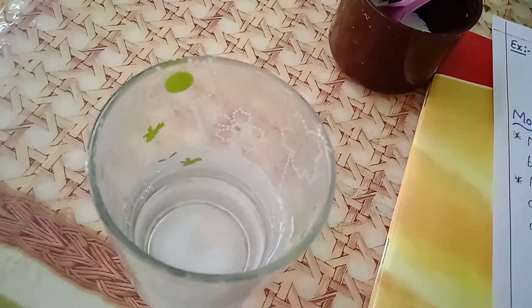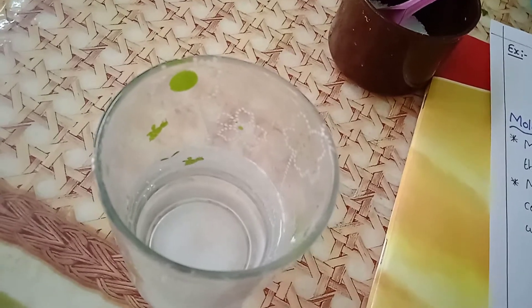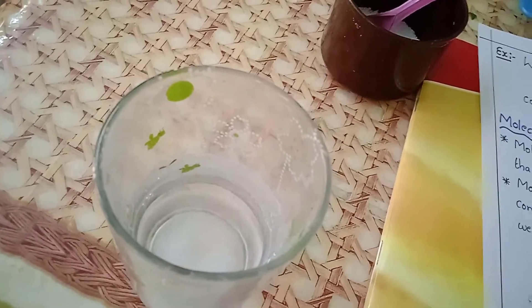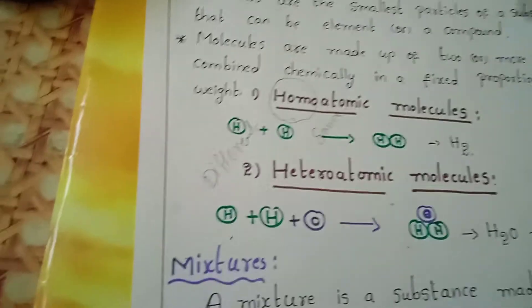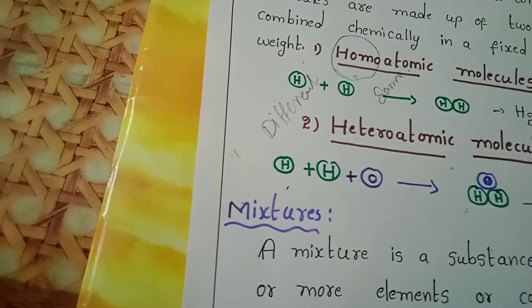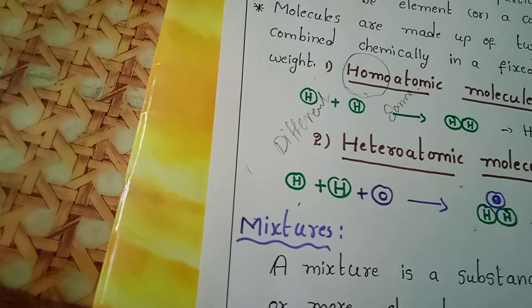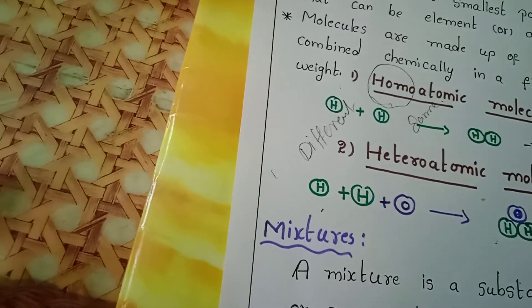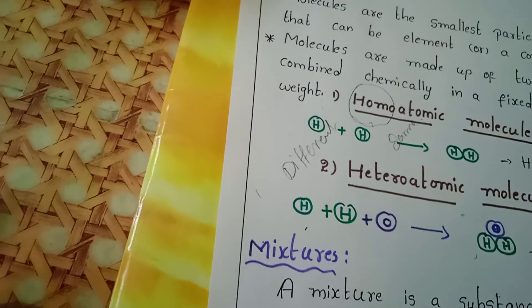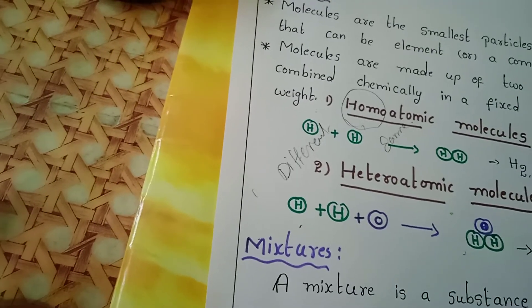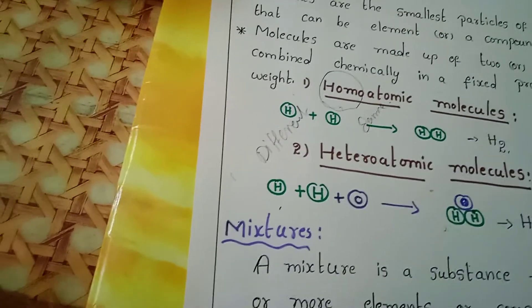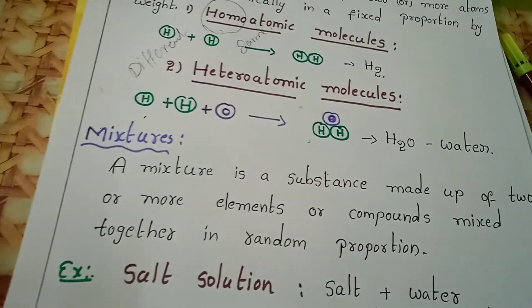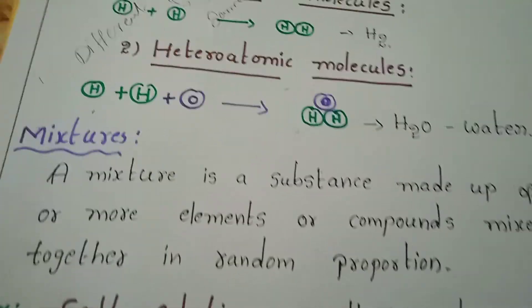That is the difference with a mixture. For a water molecule, you must use two hydrogens and one oxygen — that is compulsory, in a fixed proportion. But a mixture is not like that — you can use any proportion. For water molecule formation: two hydrogens and one oxygen. For carbon dioxide formation: one carbon and two oxygen molecules. These ratios cannot change.